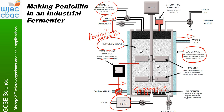The pH is monitored, and if it gets too high or too low, different substances are added. There's an exhaust outlet where carbon dioxide passes out, because that's made during respiration. Finally, after about 200 hours, the fermenter is drained and the product is collected from the outlet.